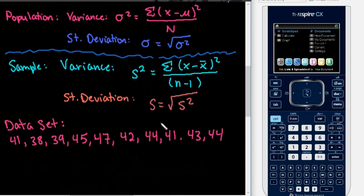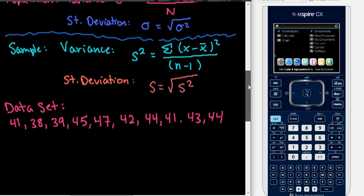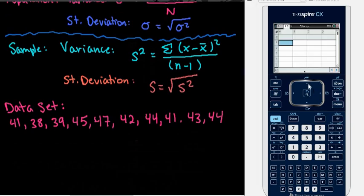We're going to use the Inspire to help us find these so that we don't have to do the hand calculations. In order to do this, we want to add a data and statistics screen, and then you would put in all of your information. Let's say I wanted to call this Numbers or something like that. Then I would come down and put in all of my data values. You would name it whatever you want, whatever your data values are, and then you would put in all of your numbers.